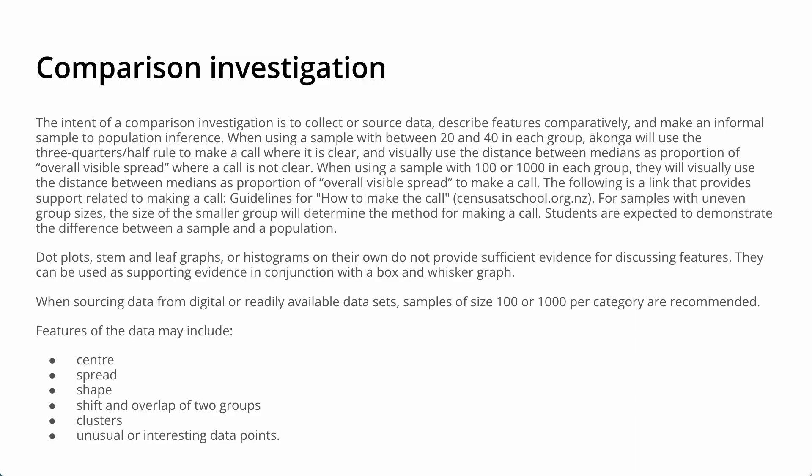Use a different method when the sample is between 20 and 40 in each group, or when the sample is 100 or 1000 in each group. When you're getting data from a source that can easily handle it, getting a sample size of 100 or 1000 per category is recommended.